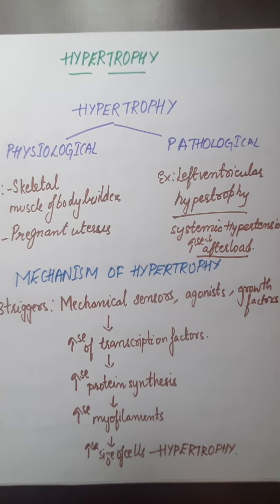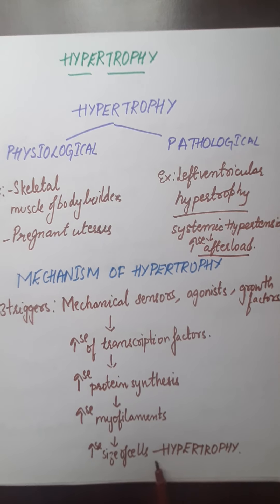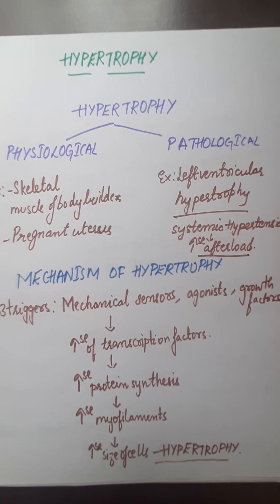The mechanism of hypertrophy is started mainly because of three triggers: mechanical sensors, for example integrin; agonists, for example alpha-adrenergic hormones; and growth factors. Because of these, transcription factors increase, RNA formation increases, protein synthesis increases, myofilaments increase, and thus hypertrophy results. In my next video I will be discussing about hyperplasia. If you like the video please press the like button, comment, subscribe the channel, and share this video with your friends so they can also benefit. Thank you.